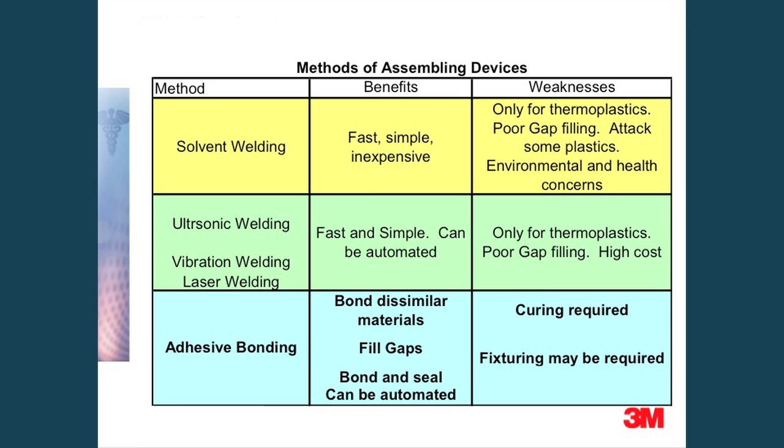There are several different types of methods of assembling devices. Solvent welding is fast, simple, and inexpensive. However, it offers poor gap filling and is used only for thermoplastics. Ultrasonic welding, vibration, and laser welding are also fast and simple, but only use thermoplastics.